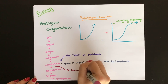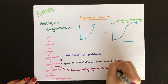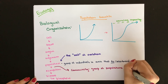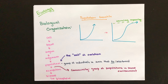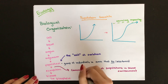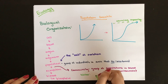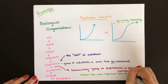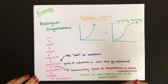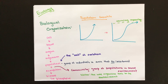A community is defined as a group of populations in the same environment — bigger than a population but not necessarily an ecosystem. To understand competition within a community, we need to talk about what a niche is. A niche is the way an organism lives within its environment — whether it eats small seeds, lives in trees at night, or anything like that.